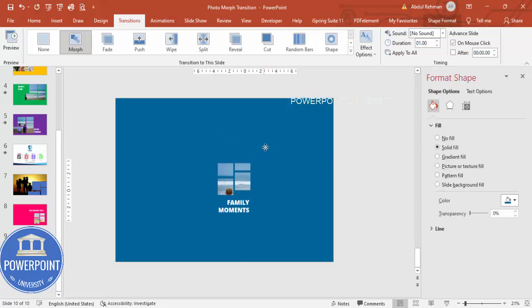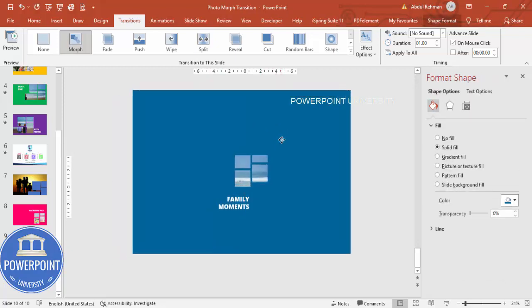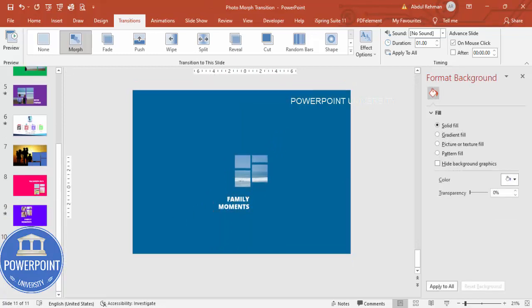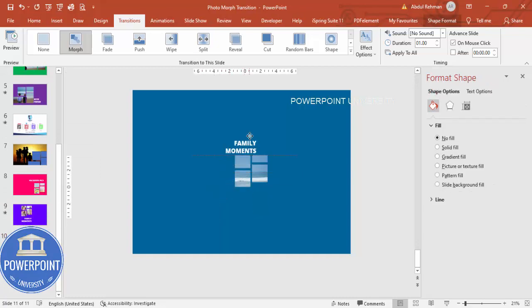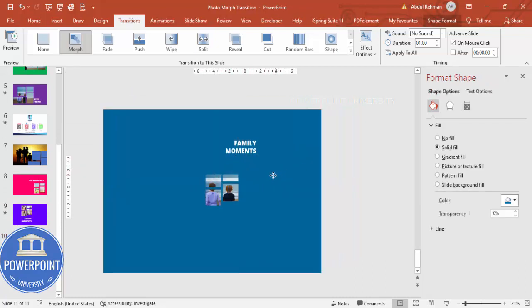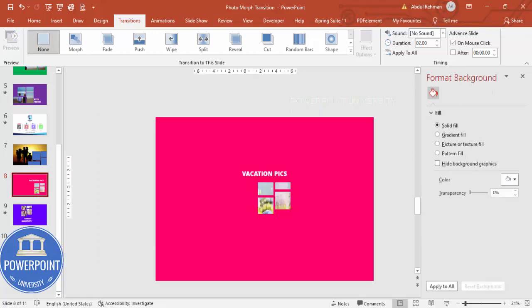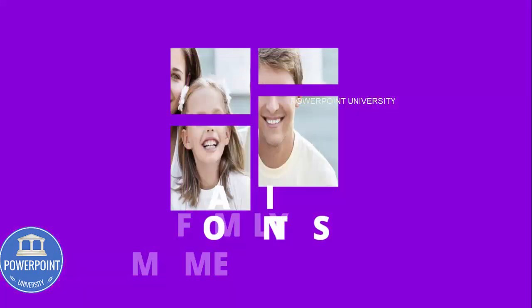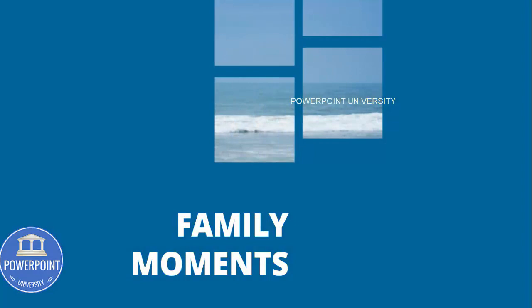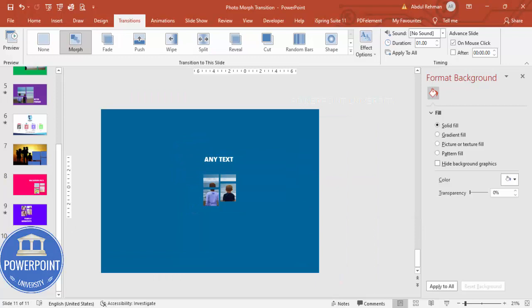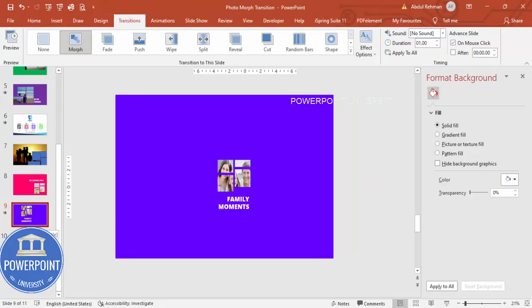Move the cutout shape to a different position to reveal different faces, then duplicate the slide. Move the text to a new location, reveal the faces in the frame, and change the text to whatever you like. Let's preview — 'Vacation Pics', 'Family Moments', and you can see the text and image transitions throughout. Make sure the transitions are set to fast.